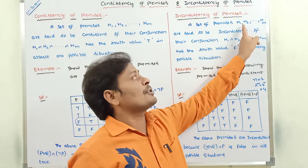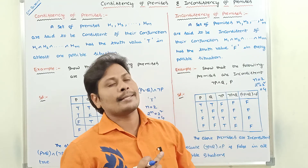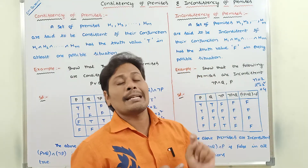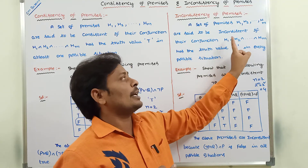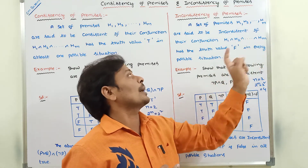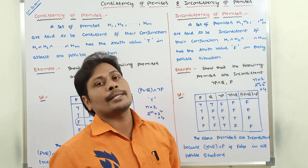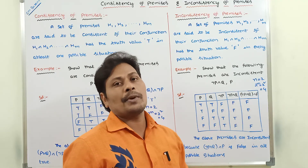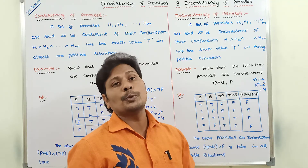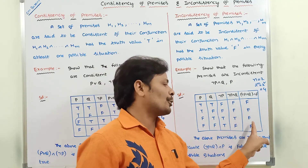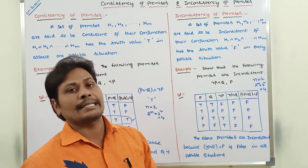Now for the definition: a set of premises H1, H2, H3, ..., Hm — that is, m number of premises — are said to be inconsistent if their conjunction H1 ∧ H2 ∧ H3 ∧ ... ∧ Hm has the truth value false in every possible situation. Among the four possible situations, the conjunction of the two premises contains only truth value false, hence these premises are said to be inconsistent.